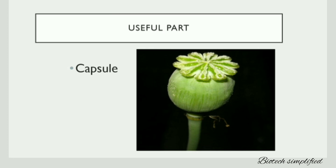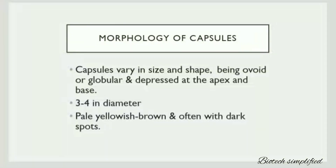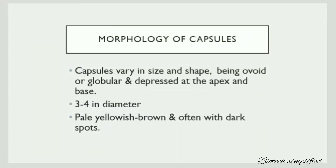Next let us discuss the morphology of capsules. The capsules vary not only in size but also in shape. Some of them are ovoid while some are globular in structure. These capsules are depressed both at the apex and the base.